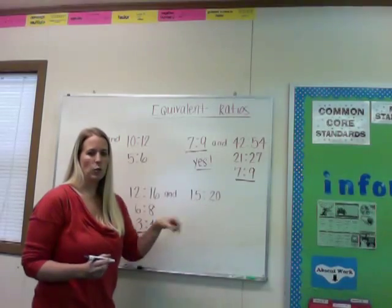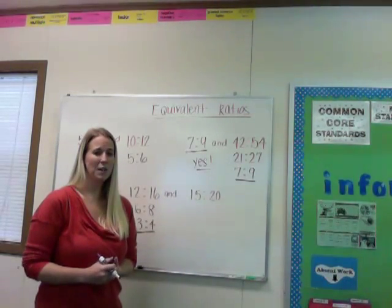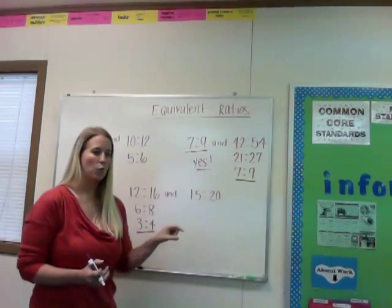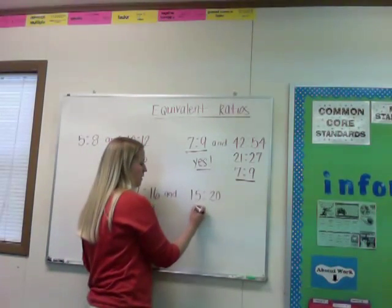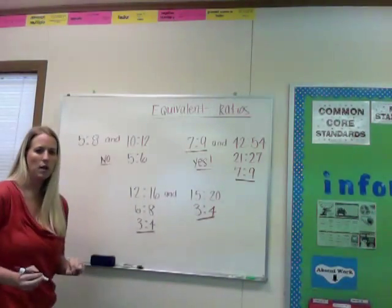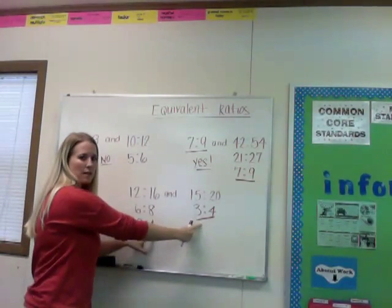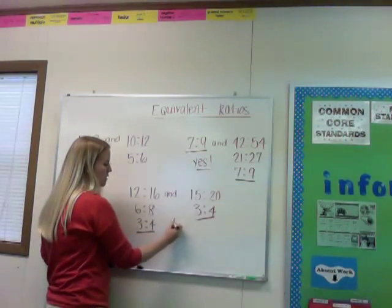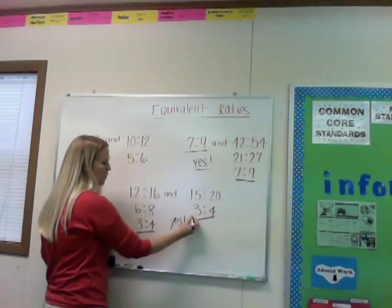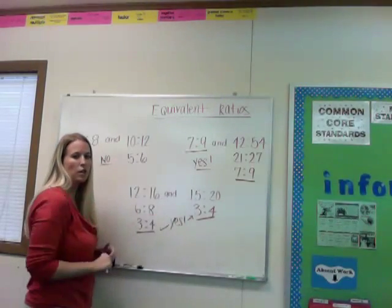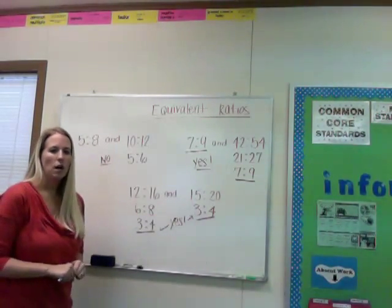Now I'm going to move to 15 to 20. I'm going to think of a number that can go into both 15 and 20 — I think the number 5 will work. 15 divided by 5 is 3, and 20 divided by 5 is 4. This ratio is now in simplest form. Since both simplest forms are 3 to 4 and 3 to 4, they match. That means these ratios are in fact equivalent — 12 to 16 and 15 to 20 are equivalent ratios.